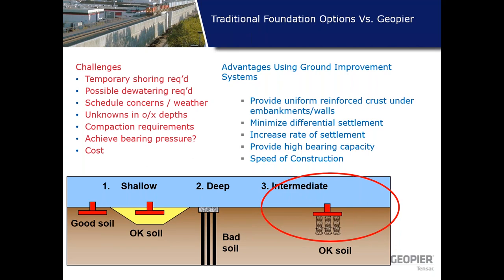If over-excavation is too expensive, the other option is deep foundation systems — transferring the loads to deeper elements such as H-pile steel elements or concrete piles, which are very expensive. The third option is an intermediate foundation system, which is the ground improvement system. You are densifying the soil by improving its mechanical properties, allowing you to design the leveling pad of the MSE wall or support embankments on a uniform reinforced crust generated by the installation of the GeoPier ground improvement elements.